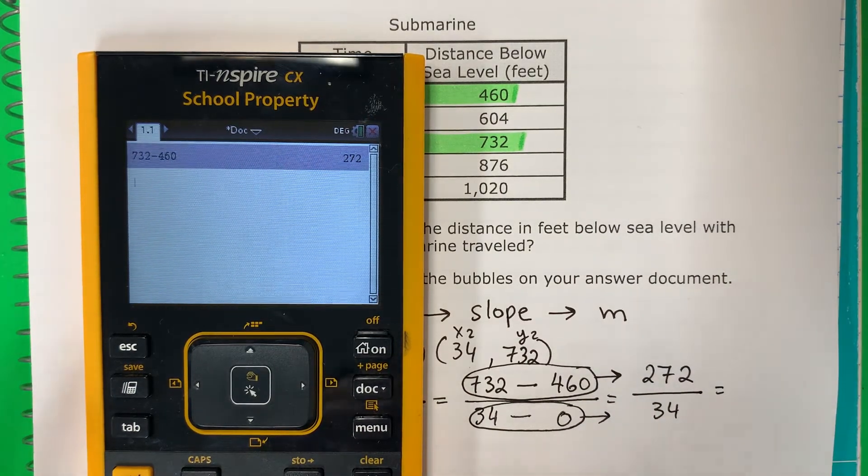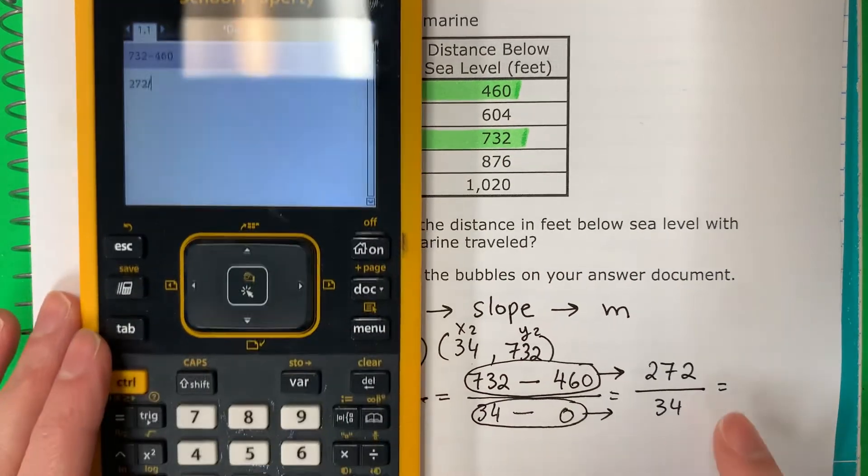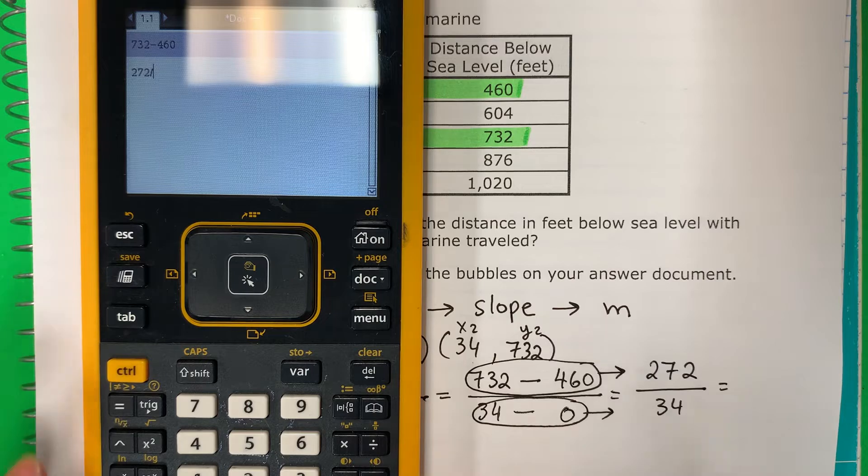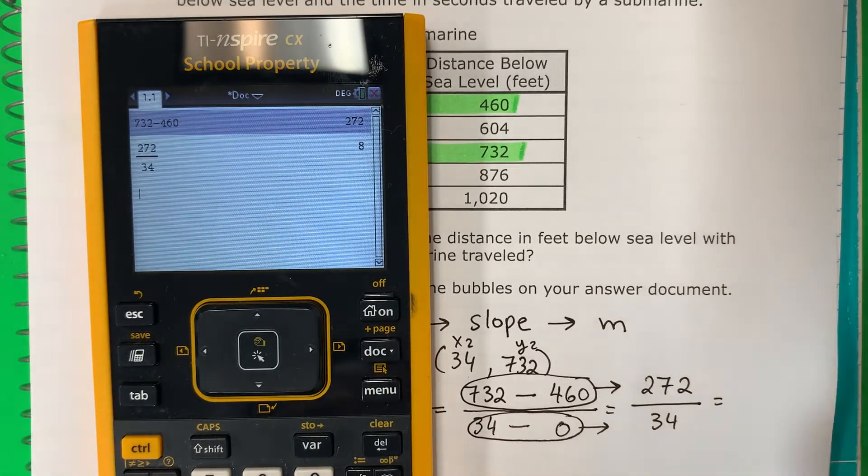Now let's put that in the calculator. 272 divided by, division, this is divide, division, 34. 8.